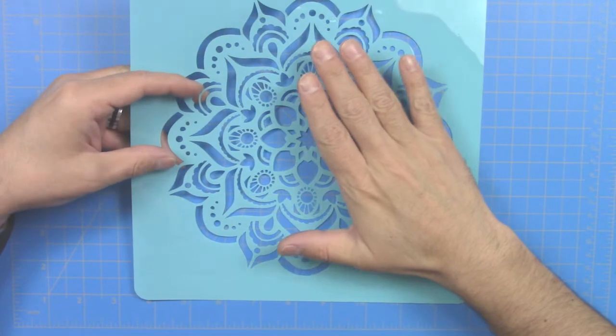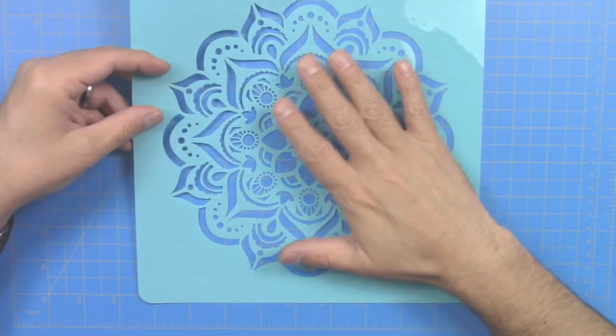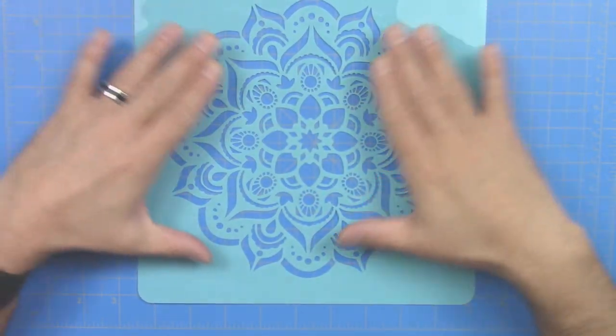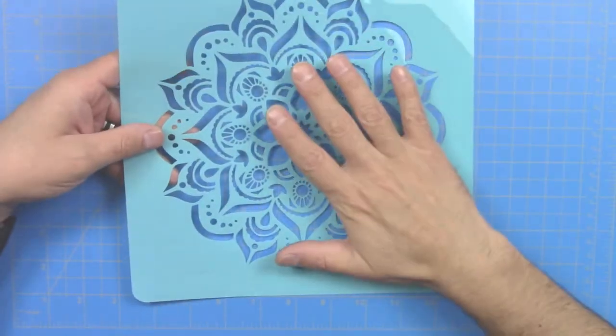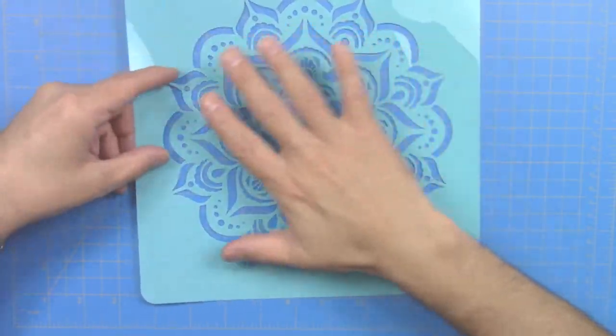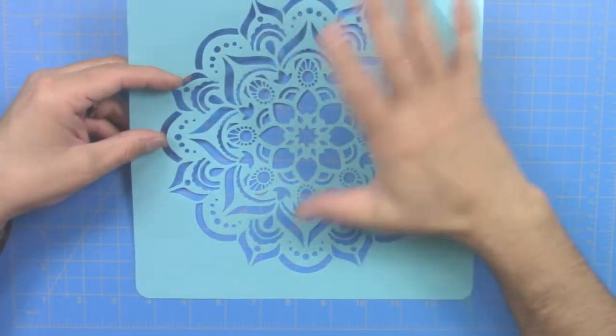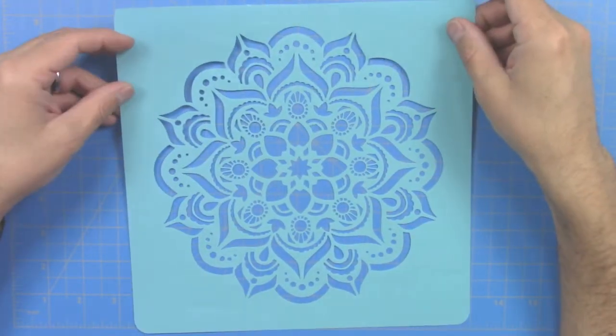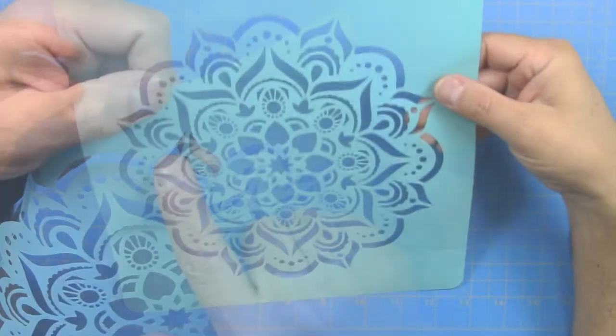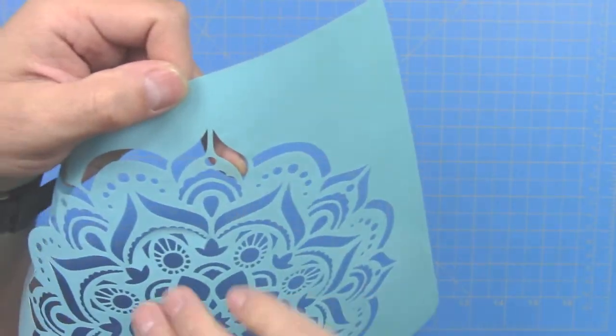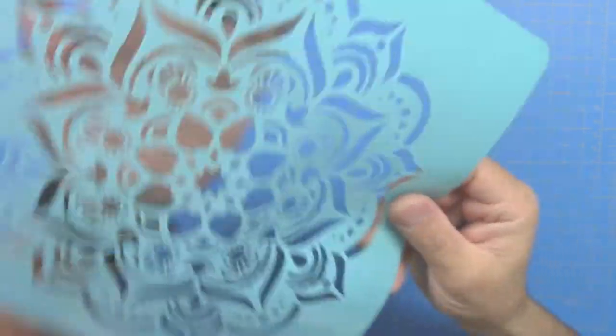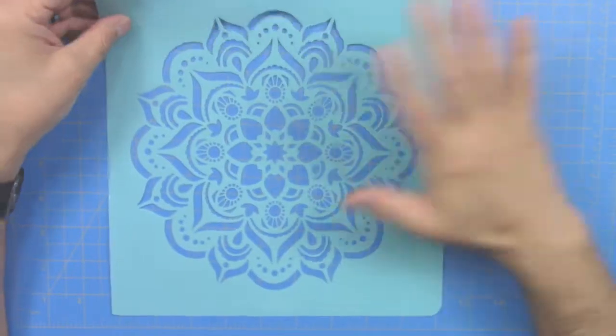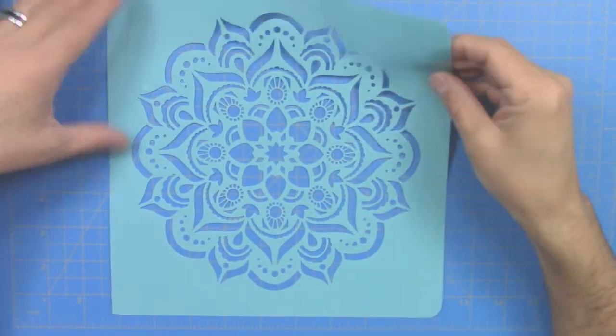The material cuts very well on the Cricut Explore and this is a very intricate and detailed design. As you can see you can achieve very sharp corners and a very clean cut. I had to create a custom setting for cutting that was a two-pass 280 pressure with a fine tip blade on a standard grip mat.